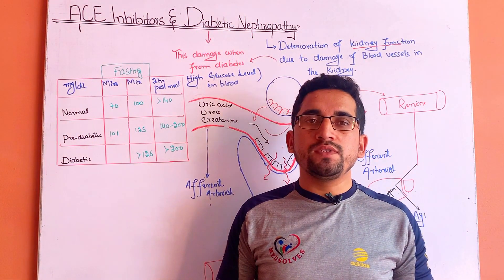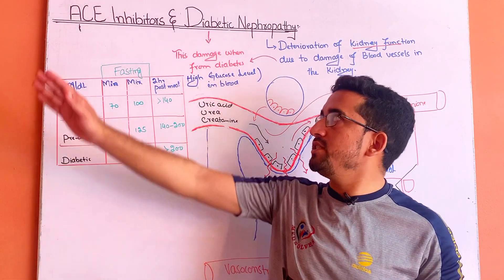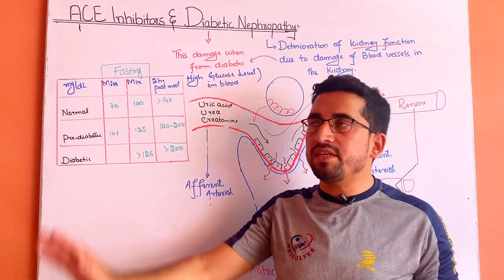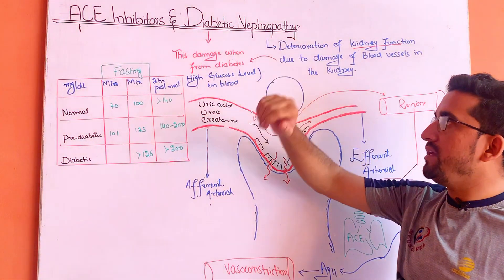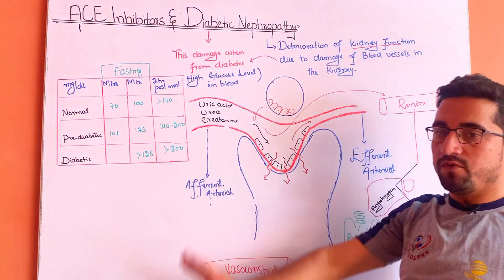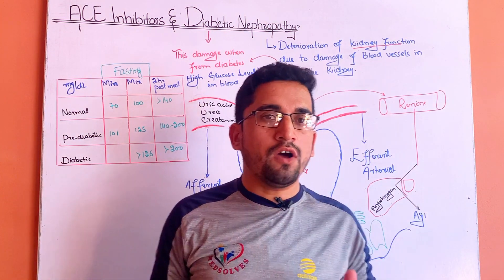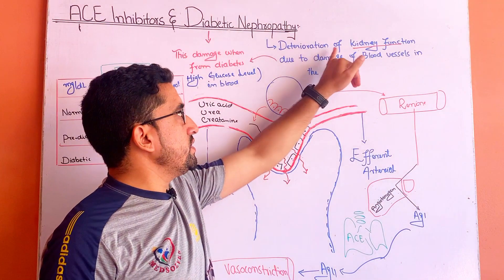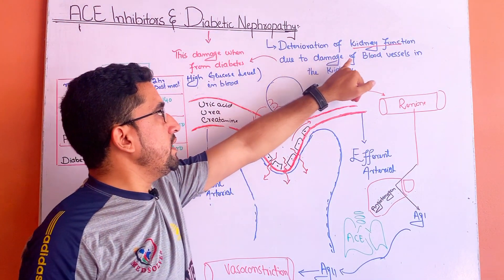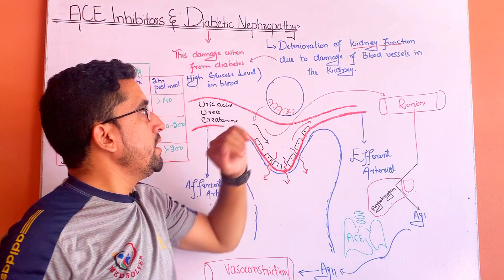Hello viewers, today we will discuss the indication of angiotensin-converting enzyme inhibitors in diabetic nephropathy. First of all, what is nephropathy? 'Nephro' means nephrons and 'pathy' means disorders. So it means the deterioration of kidney function due to the damage of blood vessels in the kidney.